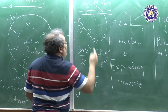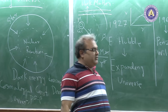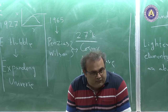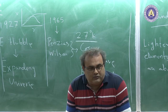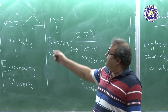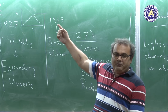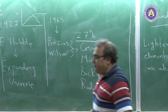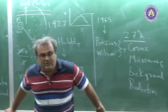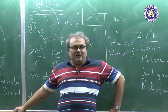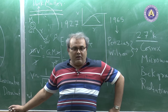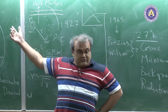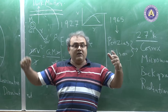Dark matter pervades the universe and we do not see it — we only feel it gravitationally. When cosmologists referred to the matter dominated phase of the universe, they actually meant it was dominated by this dark matter. The matter we are made of — baryonic matter described by the Standard Model of particle physics — is only about 5% of the total energy content of the universe.